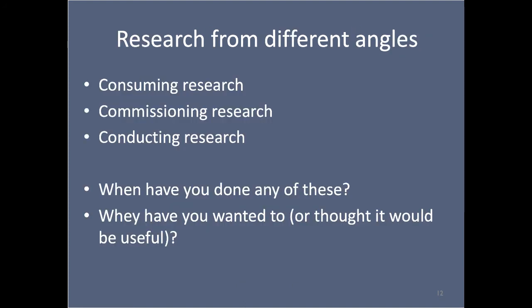So we've talked about how you can use research and what you're going to learn in this class in different ways: consuming research — we've given a bunch of examples; commissioning it — once you know more about research and what can be done well, that can help you commission research; and conducting research, which can be formal research or all kinds of evaluations and performance measurement within your own organization. So take a moment and think about when you've done any of these things, and when you've wanted to or thought it would be useful.